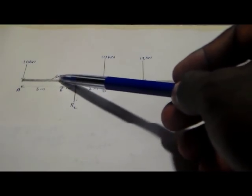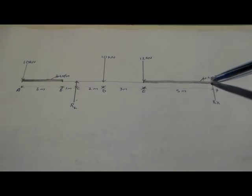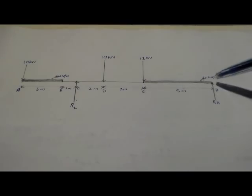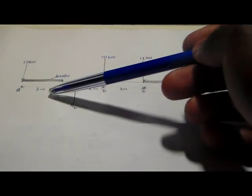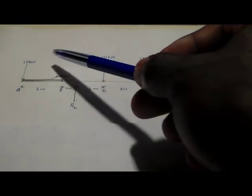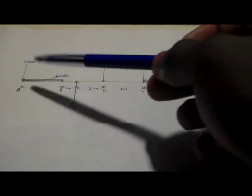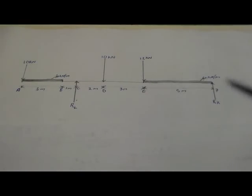One distributed load is 4 kilonewtons per meter and the other one is also 4 kilonewtons per meter. The first is distributed over 5 meters from right to left, and the second over 3 meters from left to right. We also have point loads of 10 kN, 10 kN, and 12 kN.